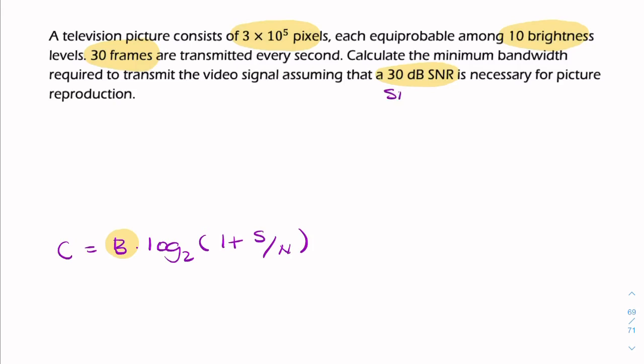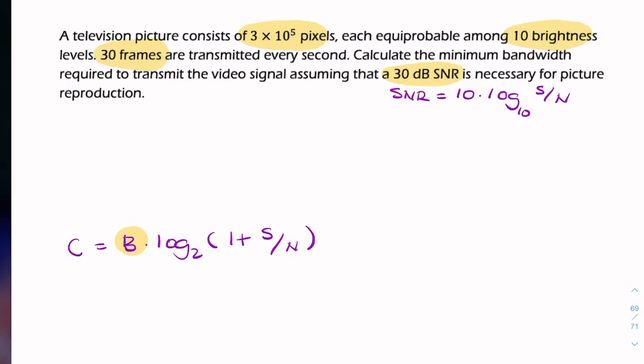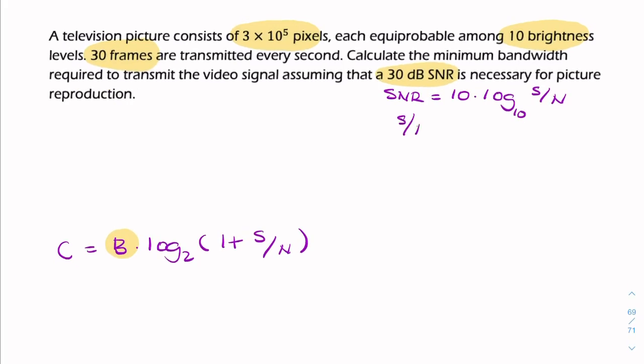So the 30 decibels, that's actually 10 log to the base 10 of the signal-to-noise ratio. So the actual signal-to-noise ratio, the ratio of mean square powers, is actually 10 to the power 30 divided by 10. So that's just 1,000. So that goes in there.